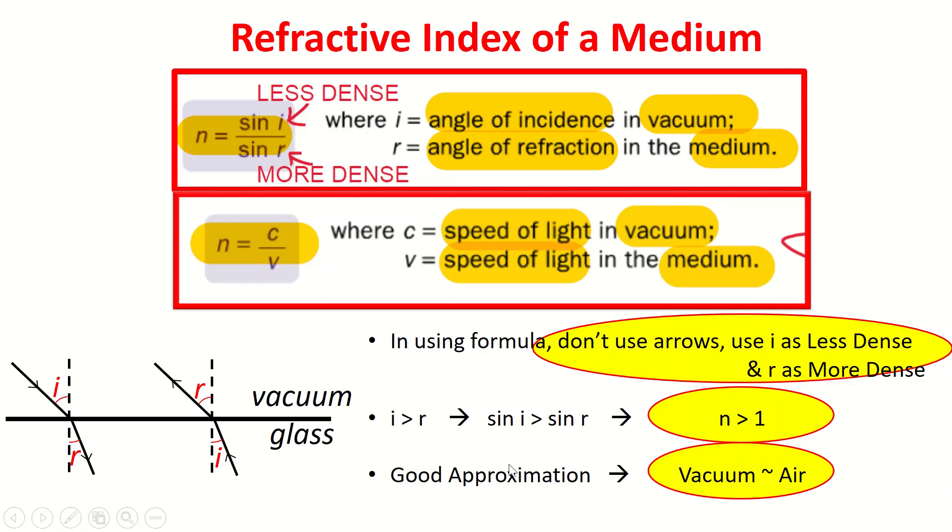My second key takeaway just to recap is that n value is definitely always greater than one. So if you find your n value let's say 0.87 you know something is wrong, you probably got your reciprocals mixed up.